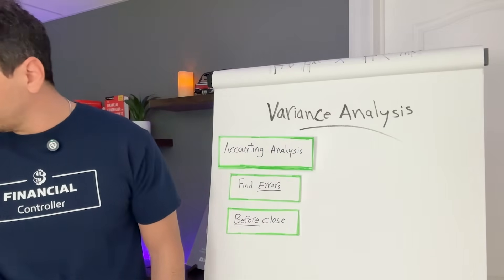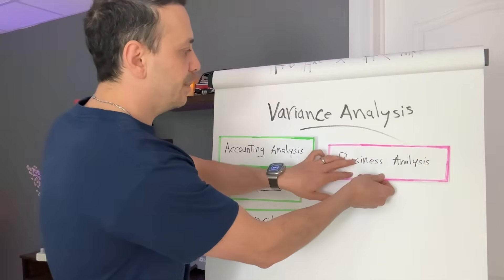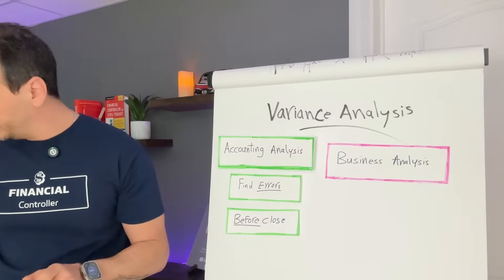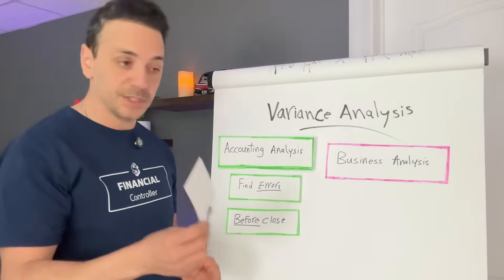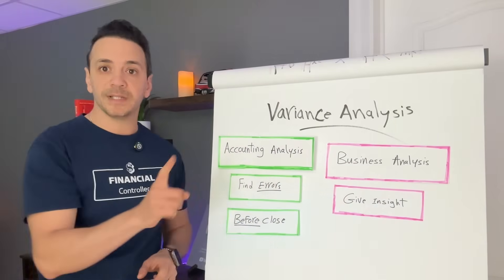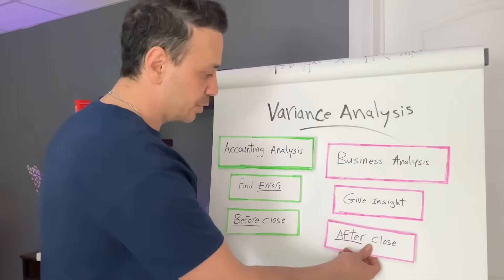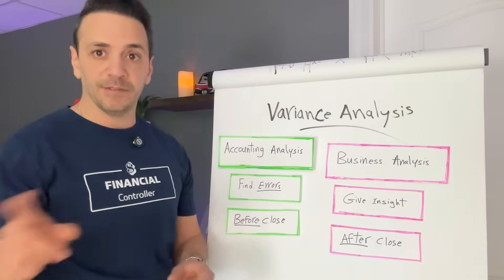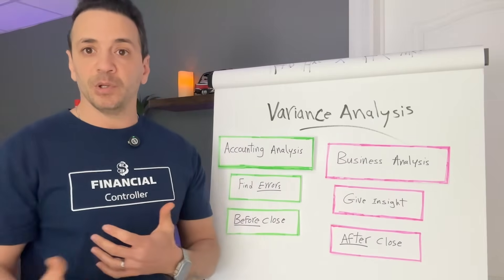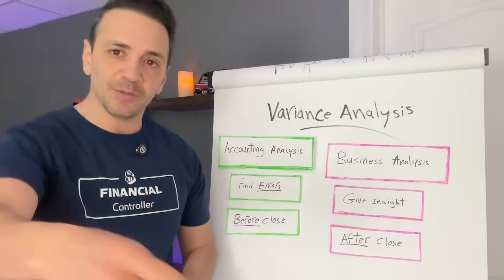The second type of analysis is a business type analysis, which has a different purpose. The purpose of it is to give insight on the business performance. That's why you perform this kind of analysis after the books are closed. Let's jump into Excel and I'll give you an example of how to perform the accounting analysis and then the business analysis.